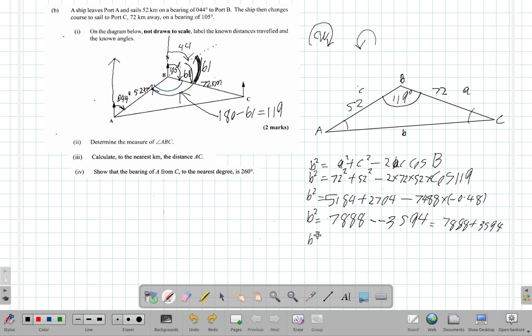I have 11,482. That's b squared. Now that I know that is b squared and I want b...